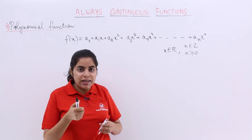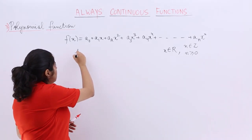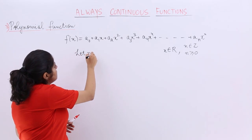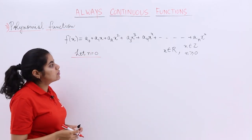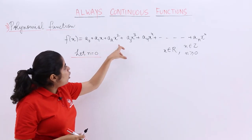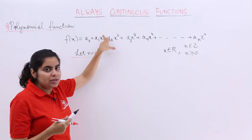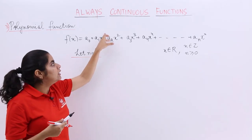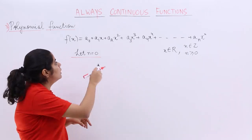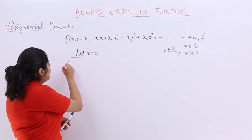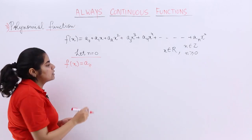To prove it, let me take different values of n. Suppose I take n equal to 0 as the first value. If n is equal to 0, then because the highest power is 0, all higher-power terms — x¹, x², x³, and so on — will not be considered. Only the first term will be considered. So I have f(x) equal to a₀ only.